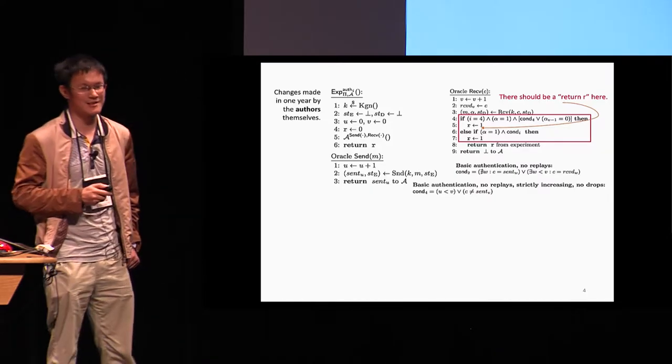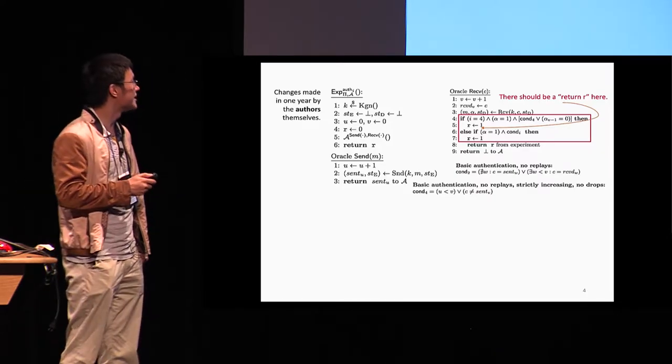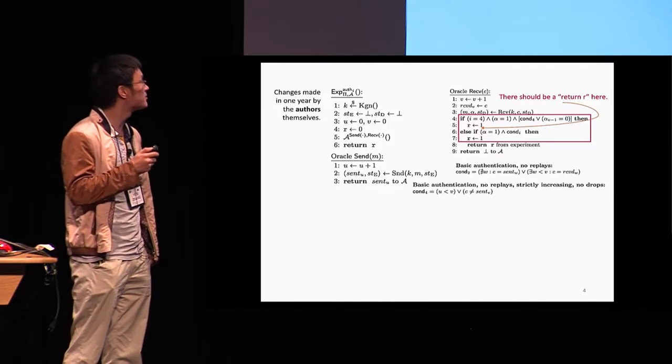And even this revision is still not correct because there really should be a return statement between line five and line six, I believe it's just a typo. So all these stories and complex games motivated us to think about what are the essential problems about indistinguishability paradigm?